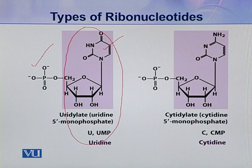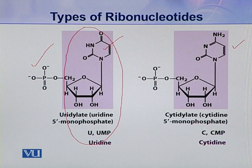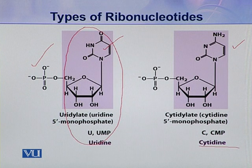The fourth and the last type of ribonucleotide is cytidylate. In cytidylate, the nitrogenous base is cytosine, and this pentose sugar and this phosphoric acid are present. So when a cytosine attaches with pentose sugar, it makes cytidine.